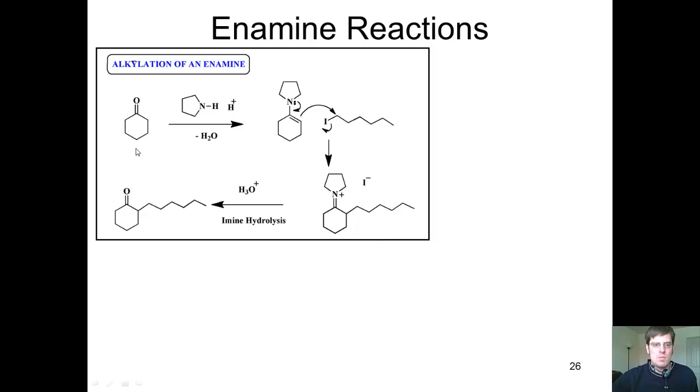Once again, I can begin with my ketone. And if I were in a circumstance where I wanted to generate or to alkylate at this alpha position, have a big, long carbon chain of some kind, what I could do is treat this ketone with an amine, like this cyclic amine shown here, and then with base, and it would generate this enamine.